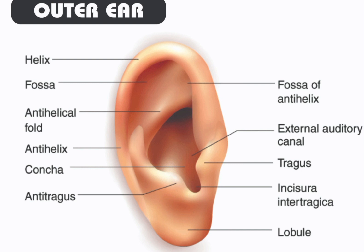Ear canal, also known as the external auditory meatus, is a tube-like structure that carries sound waves to the eardrum. The ear canal also produces earwax to protect the ear from dust and foreign particles.